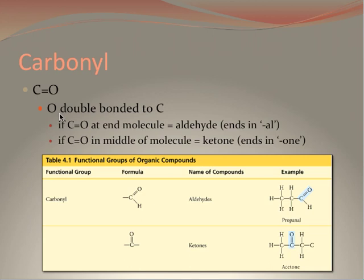The carbonyl groups are represented by a C double bonded O group, where if the C=O is found at the end of a molecule, it's called an aldehyde and ends in AL. And if the C=O is located in the center of the molecule, it is known as a ketone, which ends in an ONE extension.